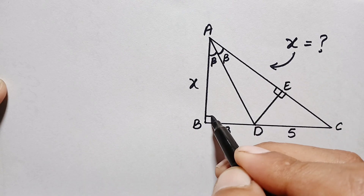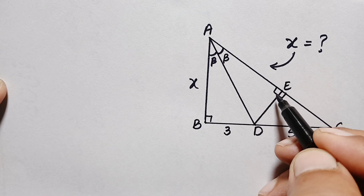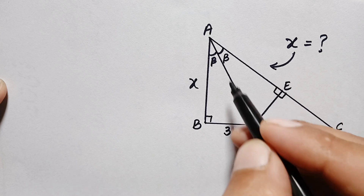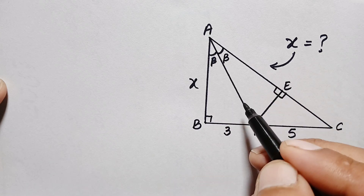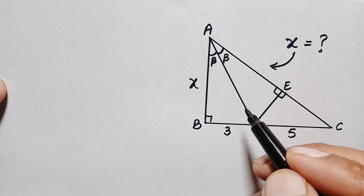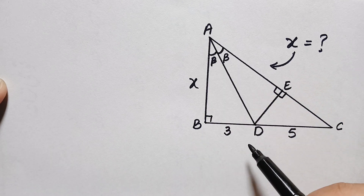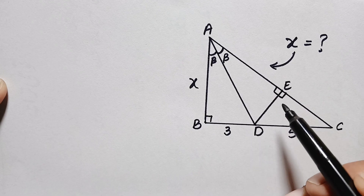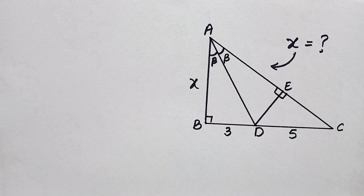The angles at point E in both triangles are right angles because this is a perpendicular to this side, so this angle is a right angle. The angle at point B is also a right angle. They also share the same common side. So by the Angle-Angle-Side (AAS) property, these two triangles — triangle ABD and triangle ADE — are congruent triangles.